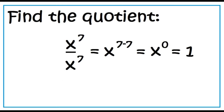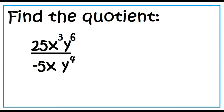x to the power of 7 divided by x to the power of 7 is equal to x to the 7 minus 7, which is x to the power of 0, and this is equal to 1.